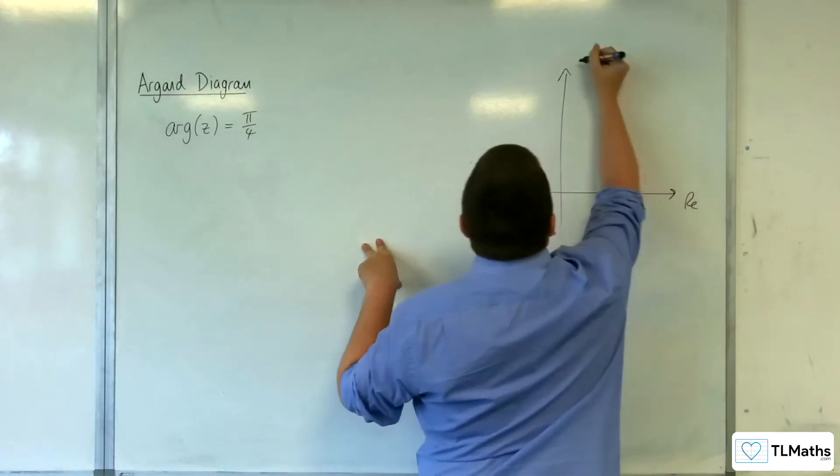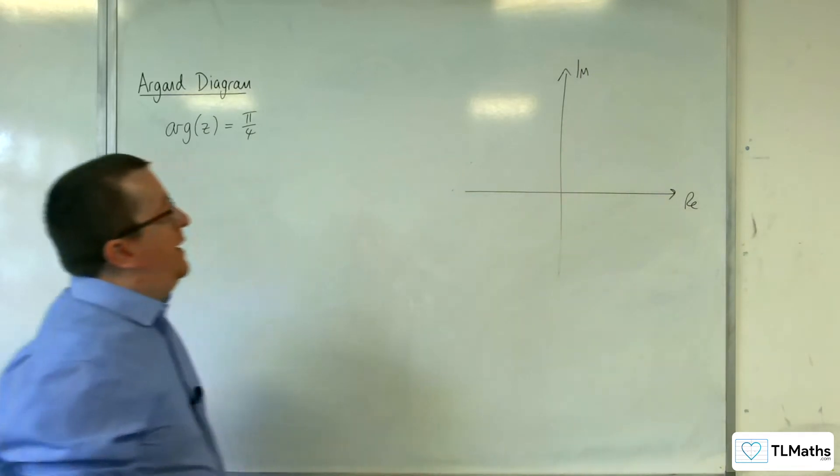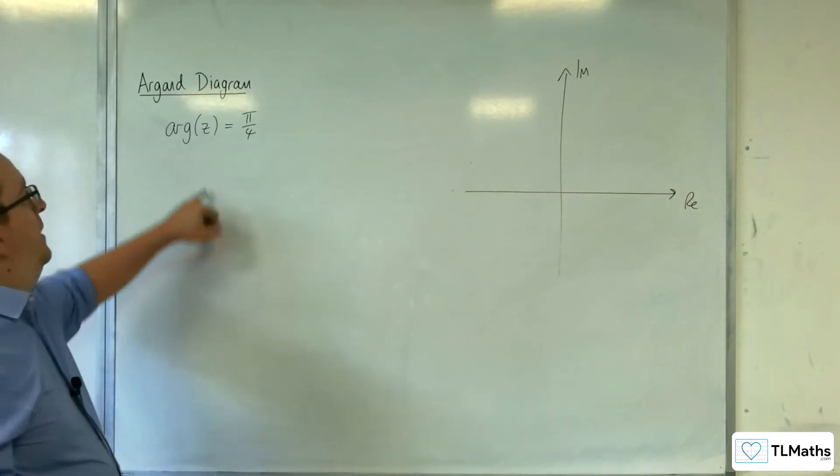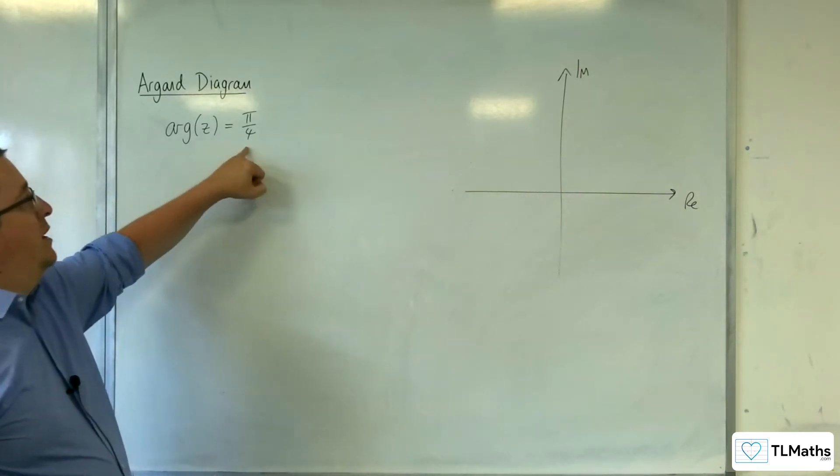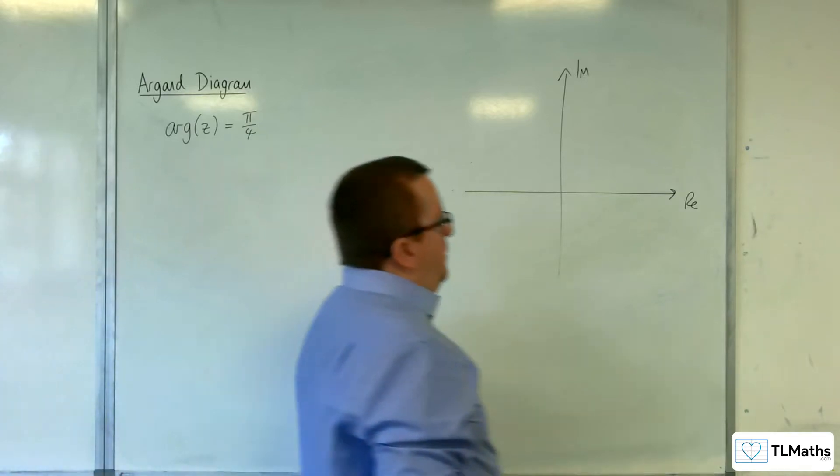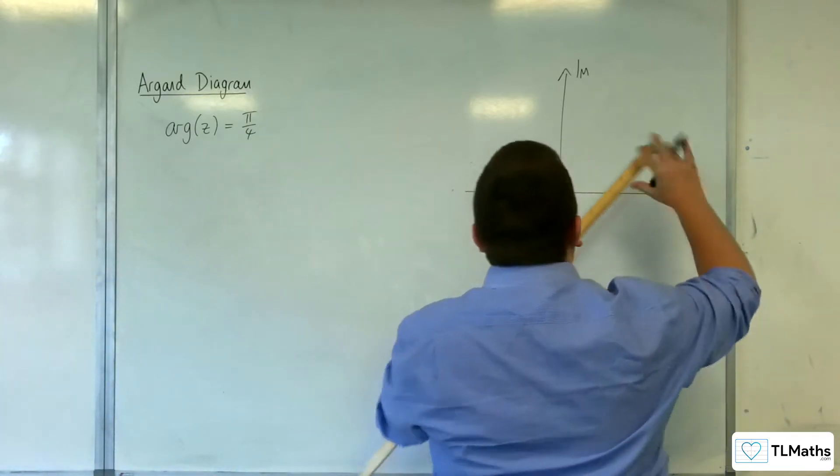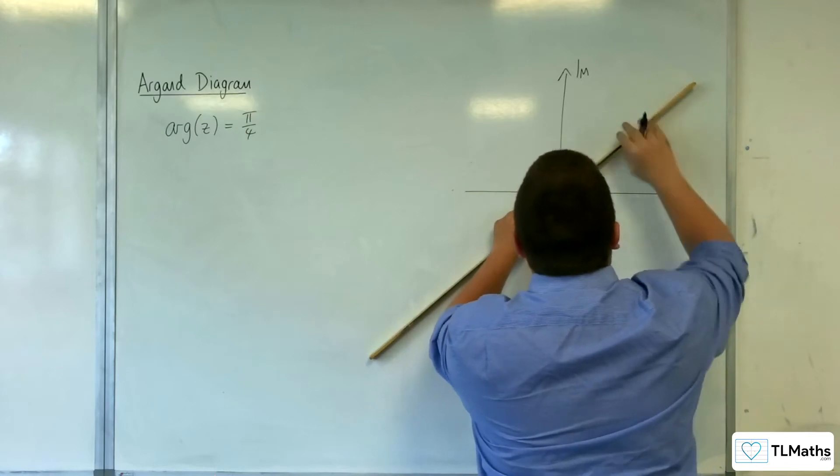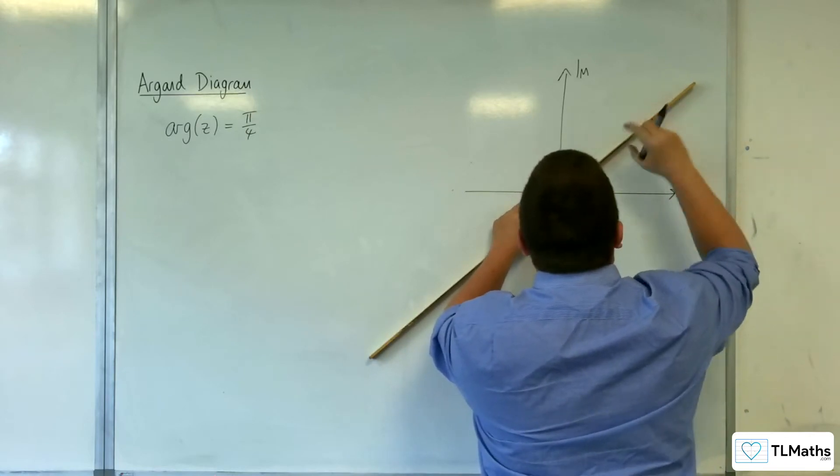So here's your real axis, an imaginary axis. Now if I'm saying that all of the complex numbers that I'm considering have the argument pi over 4, then you're talking about any point that's along that line there, right?